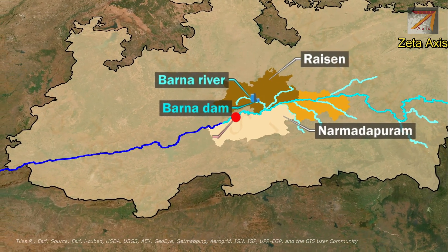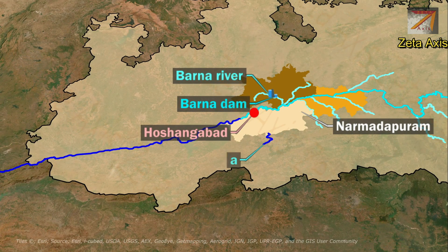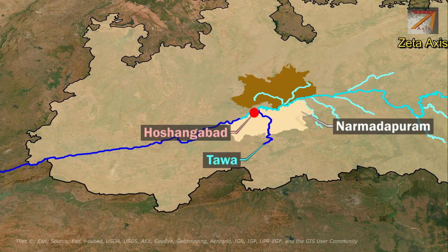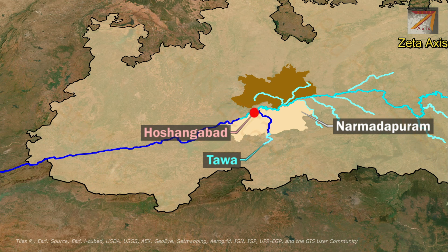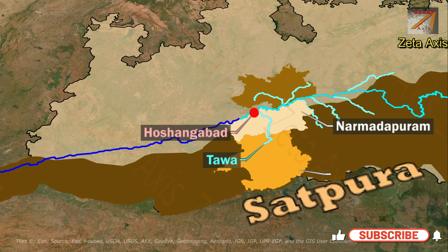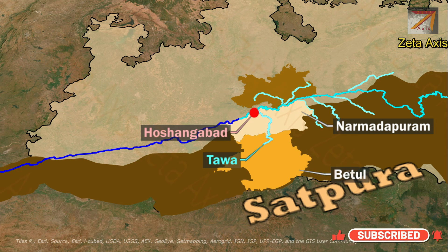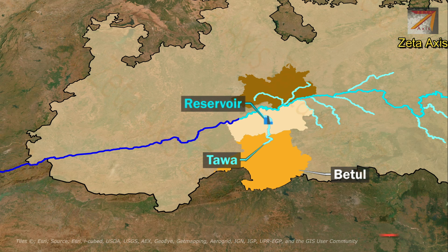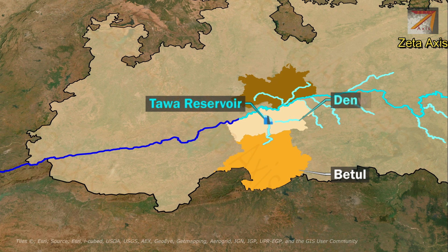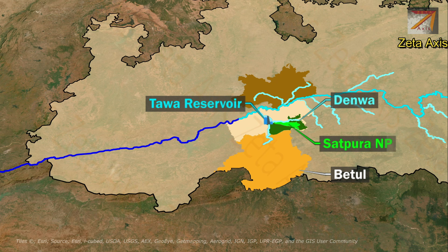Near Hoshangabad in Narmadapuram district of Madhya Pradesh, the Tawa river joins the Narmada. Tawa is Narmada's largest tributary, flowing for 172 kilometers, and rises in the Satpura range of Betul district. Tawa reservoir is constructed on the Tawa river in Narmadapuram district. Within the Tawa reservoir flows the Denwa river, a tributary of the Tawa. The Satpura National Park and Pachmarhi Biosphere Reserve are located on the banks of the Tawa river.